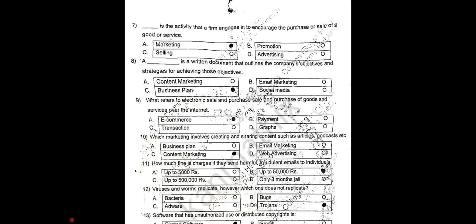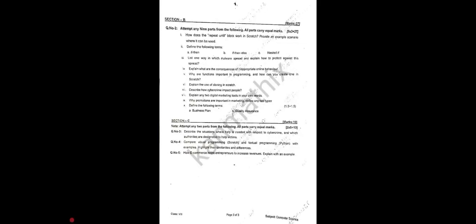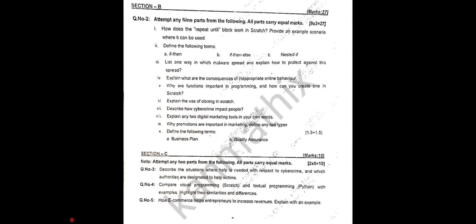So these are your 13 marks from 13 MCQs. Please let me know in the comment section how many MCQs you got correct. For question number 2, Section B, there were 10 questions and you had to attempt 9. Each question was 3 marks, making a total of 27 marks.